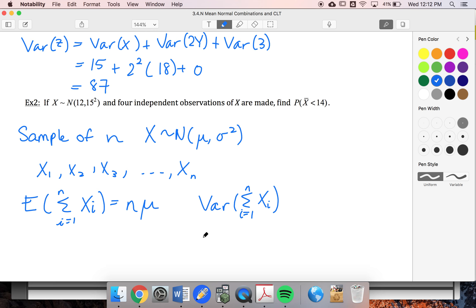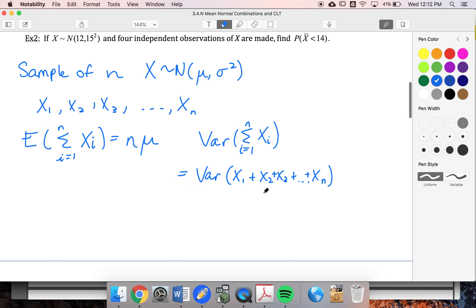Because, let me make this clearer, this is going to become variance of x1, x2, x3, xn. And remember, we can't just add all of these up and say n x's, because that's different for variance. So this becomes n times sigma squared.